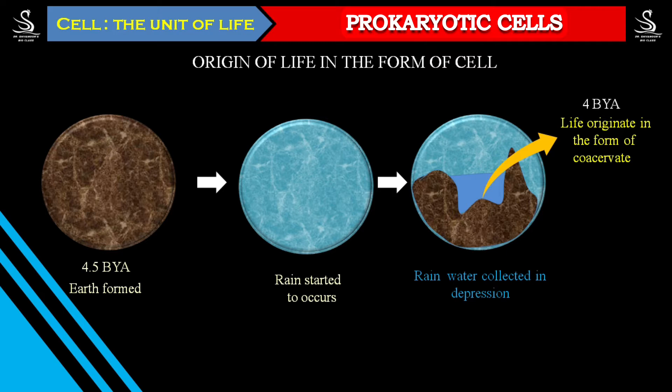Then whatever chemicals were there, they started to react with each other, and then for the first time life appeared on the earth. That was in the form of coacervates, about four billion years ago. After the formation of earth there was no life for about 500 million years, then slowly life appeared on the earth in the form of coacervates.